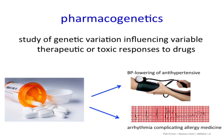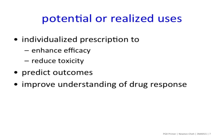Pharmacogenetics is the study of genetic variation influencing variable therapeutic or toxic responses to drugs. Its potential uses could include individualized prescription to enhance efficacy and reduce toxicity, to predict outcomes, and to improve our understanding of the physiologic basis of drug response.